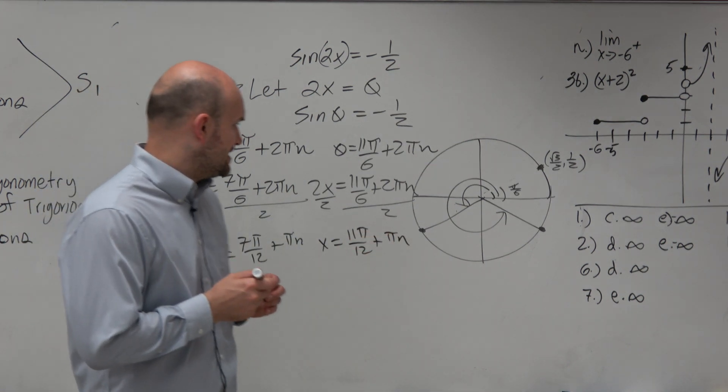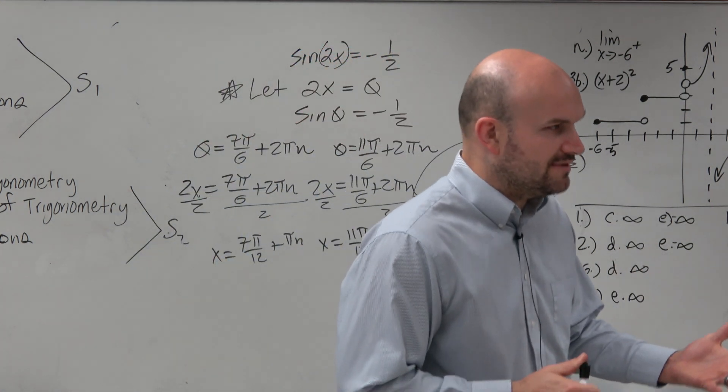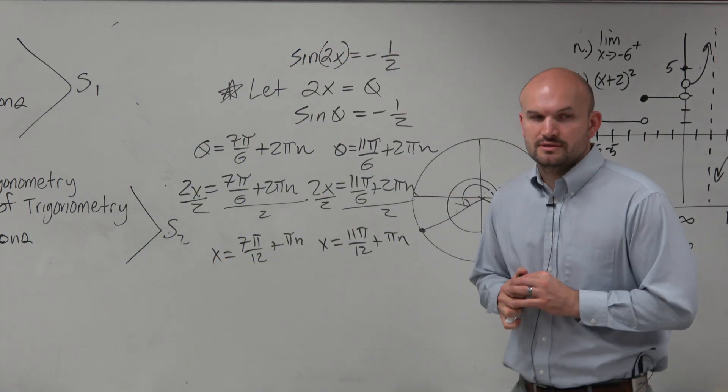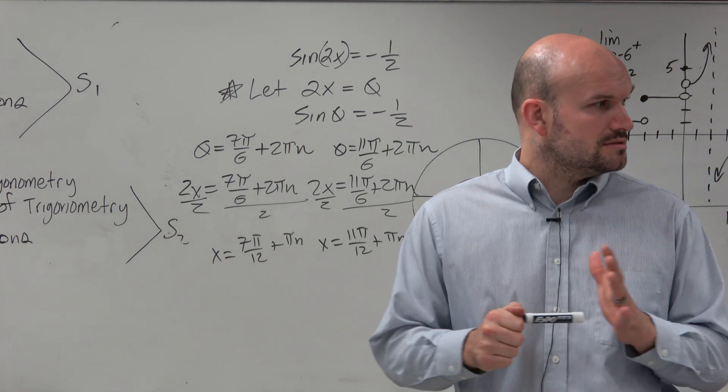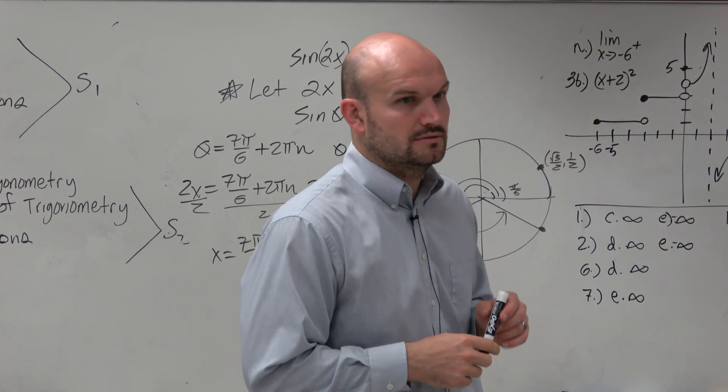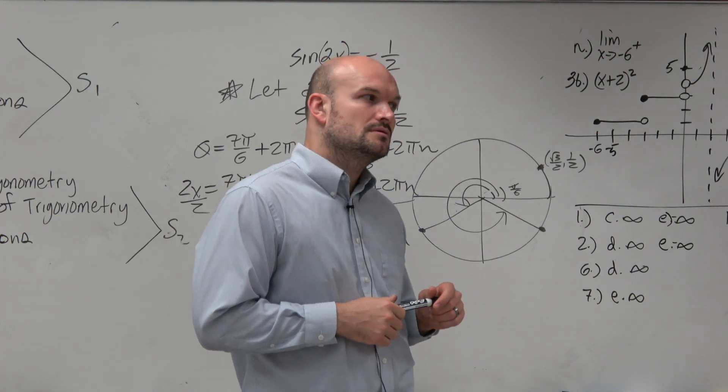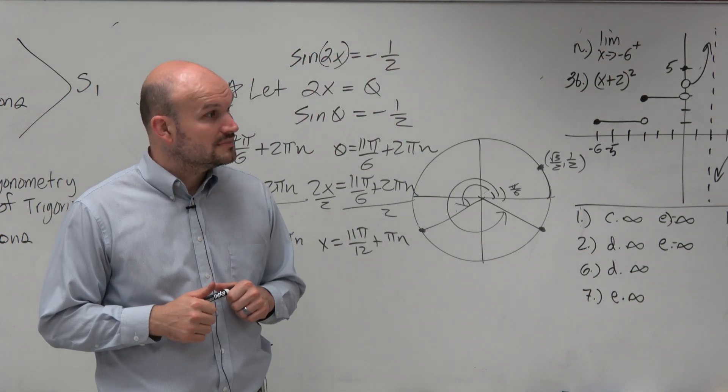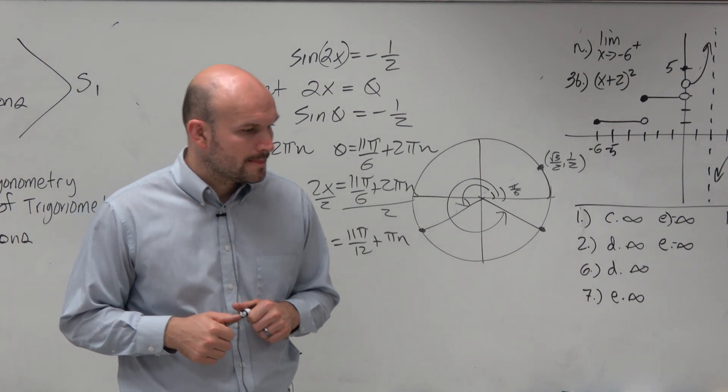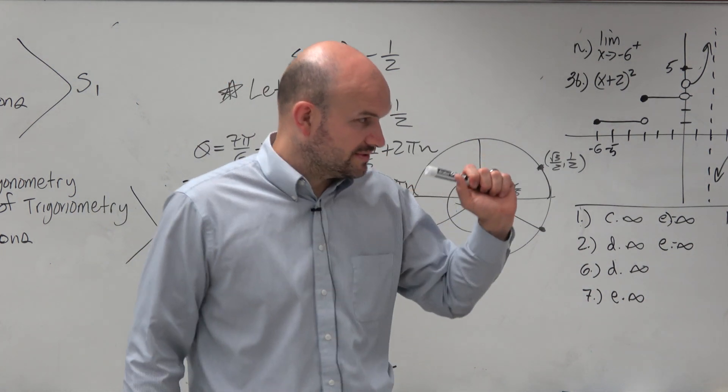So does anybody have any questions on where the pi n or 2 pi n came from? Or the answers, the 7 pi over 6 and 11 pi over 6? Or just any questions in general? Yes? You're equal to 61 and 2 answers. Huh? The 61 and 2 answers. Oh, but that's not on this. You're done with this. OK.